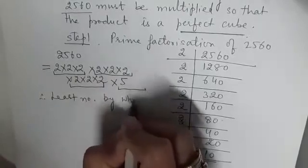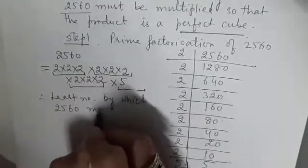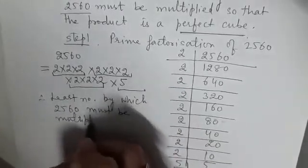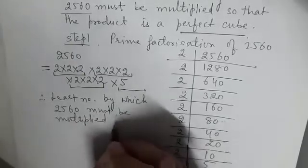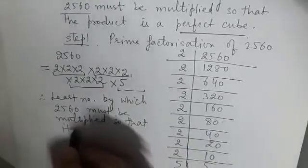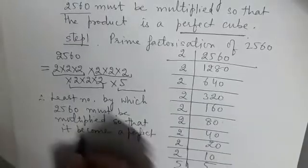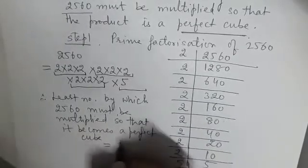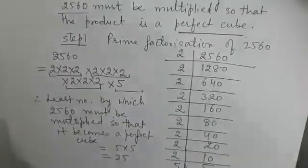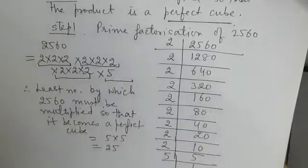Therefore, the least number by which 2560 must be multiplied so that it becomes a perfect cube is 5 × 5, that is 25. This is how you write the full answer for the examination.